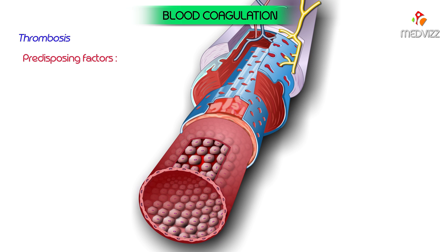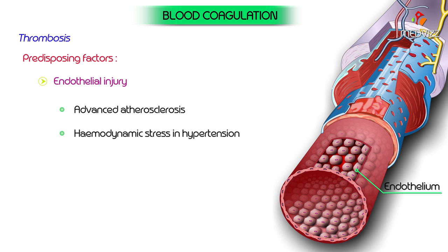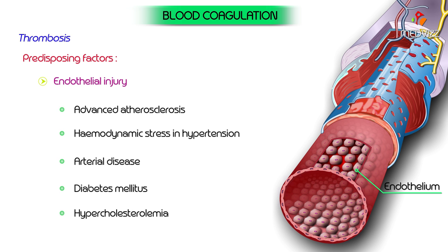Predisposing factors: Virchow described three primary events which predispose to thrombus formation. The first is endothelial injury — an intact endothelium prevents coagulation, but endothelial injury may occur in conditions such as ulcerated plaques in advanced atherosclerosis, hemodynamic stress in hypertension, arterial disease, diabetes mellitus, and hypercholesterolemia.